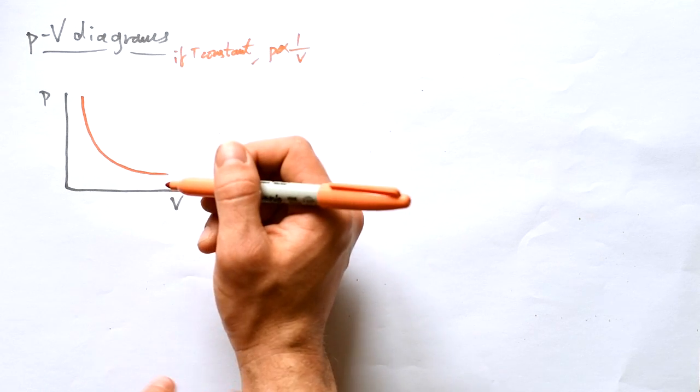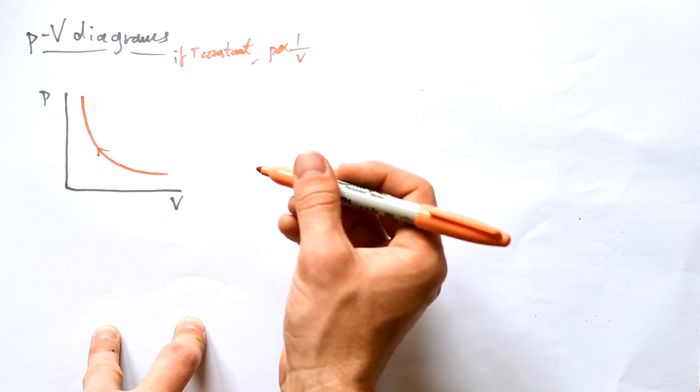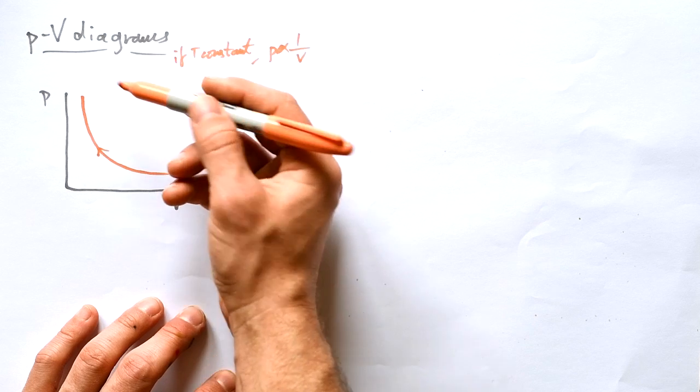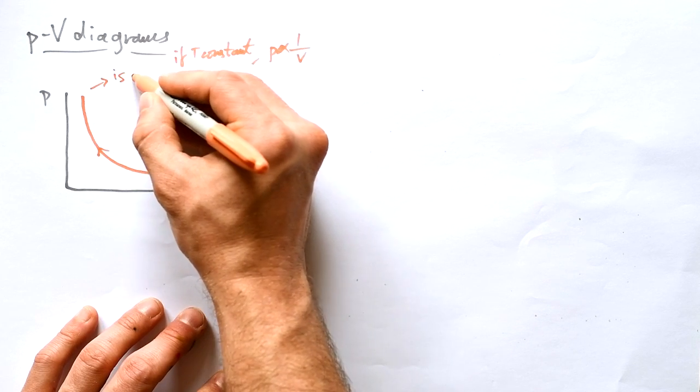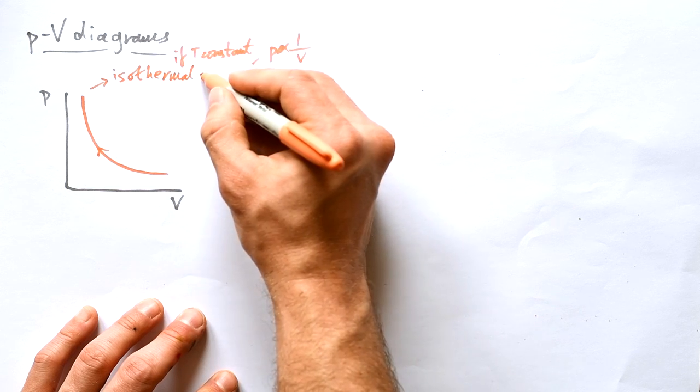Now, whichever way the pressure and volume are going, we draw an arrow showing which way it's going. So here we go. What's going on here? Well, the volume of the gas is decreasing, the pressure is increasing. So this is an isothermal, because this happened in constant temperature, compression.